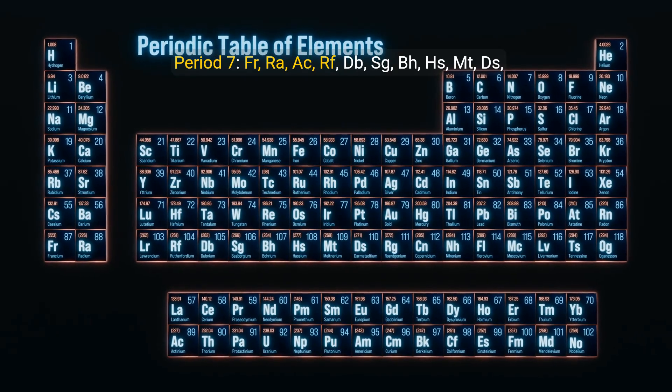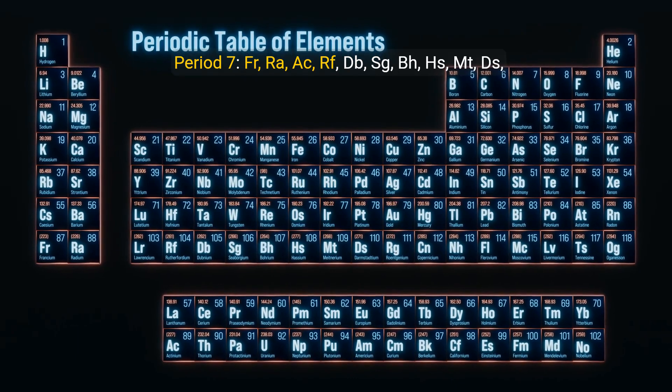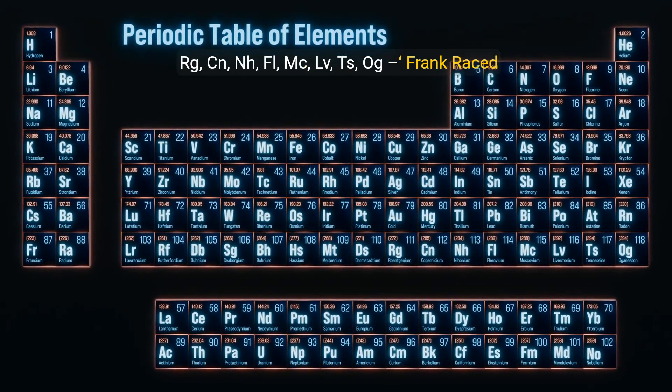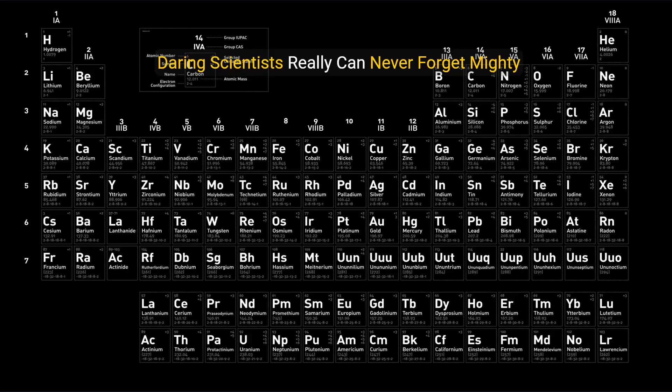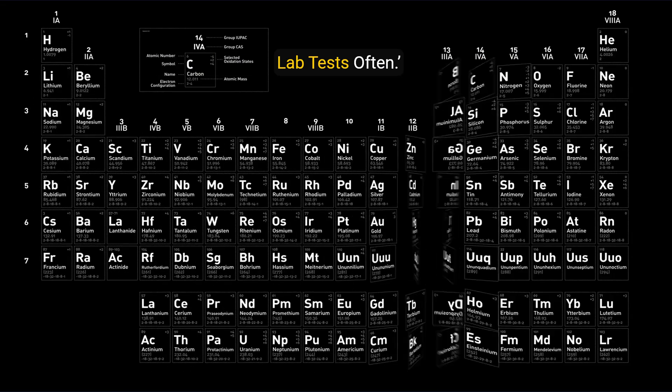Period 7: Fr, Ra, Rf, Db, Sg, Bh, Hs, Mt, Ds, Rg, Cn, Nh, Fl, Mc, Lv, Ts, Og. Frank raced across rough dunes seeking big, huge mountains. Daring scientists really can never forget mighty lab tests often.